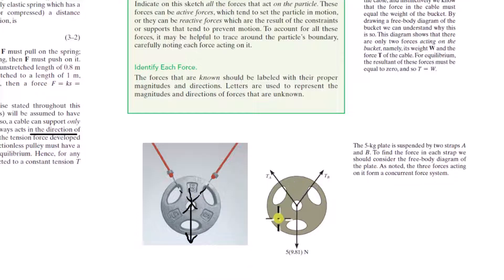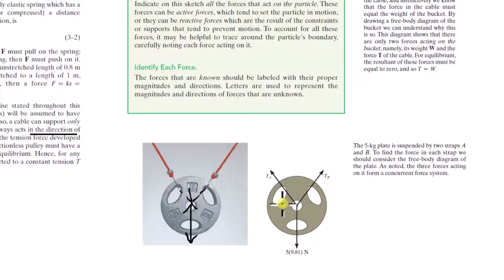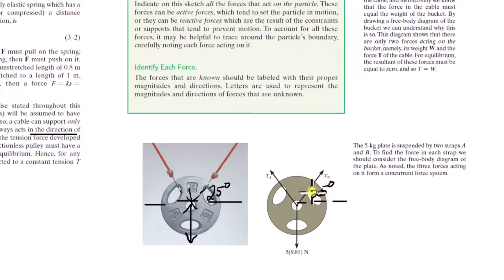You can draw the free body diagram like this, or you can remove the body and just have a point. Because when it comes to cables, springs, ropes, and chains, you know the line of action has to be along the axis of that element. Based on the geometry of the problem, as long as they give you dimensions or an angle — say 25 degrees or whatever — you know where the force is acting along the line of action of the piece.